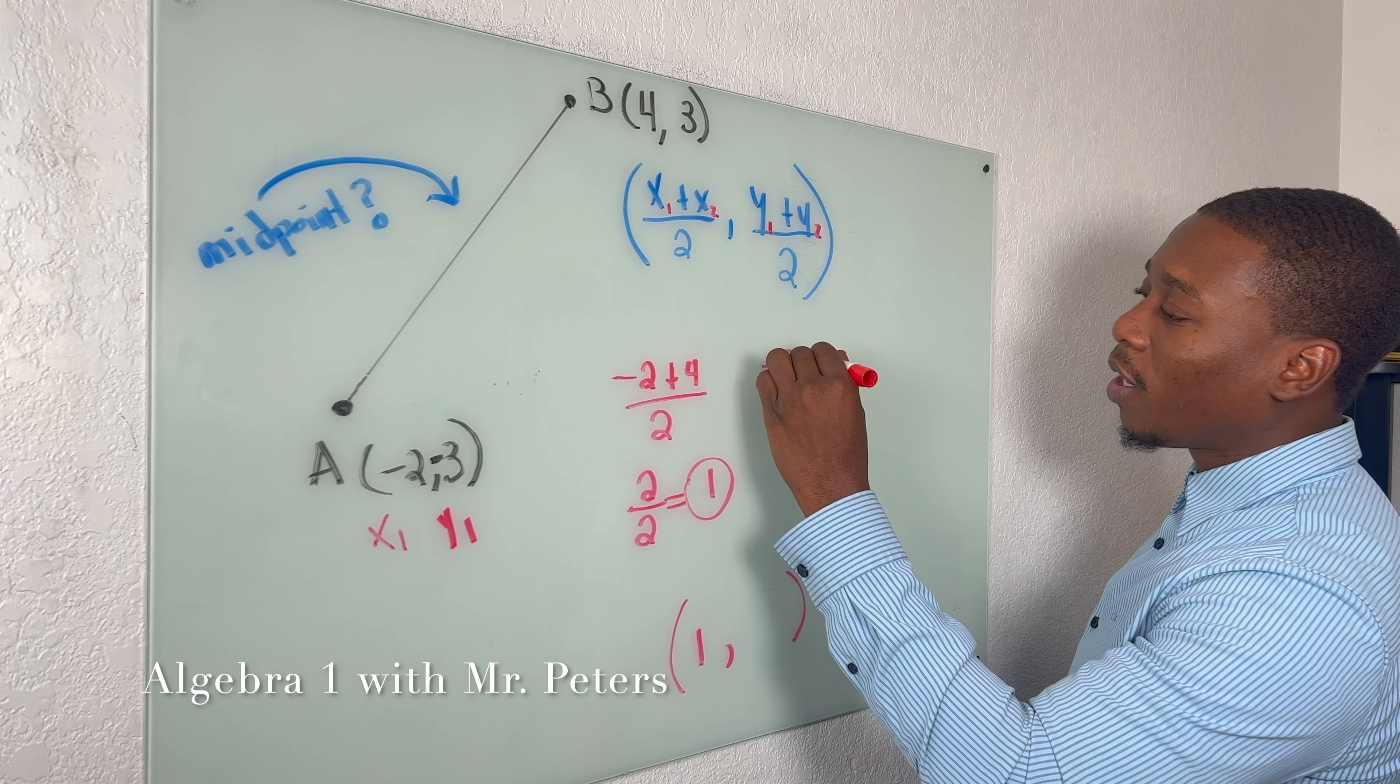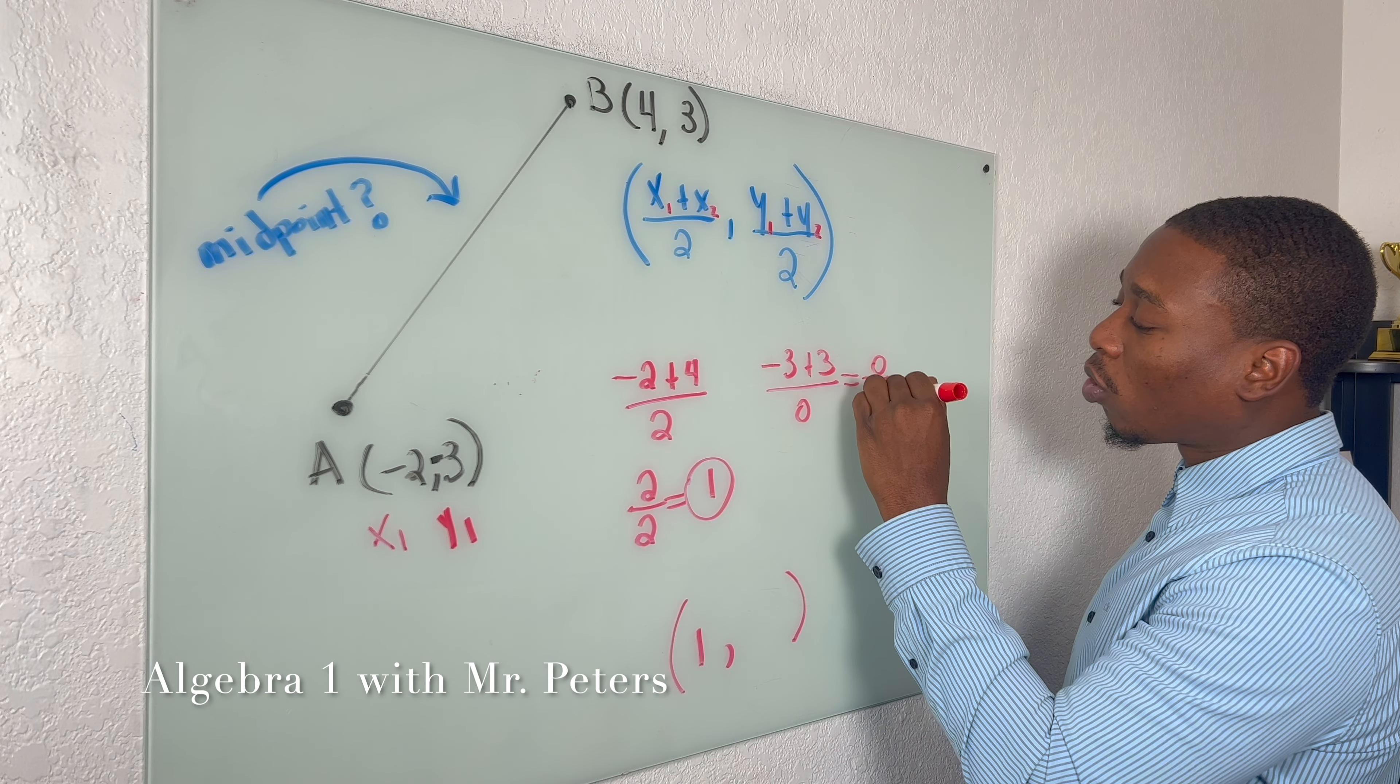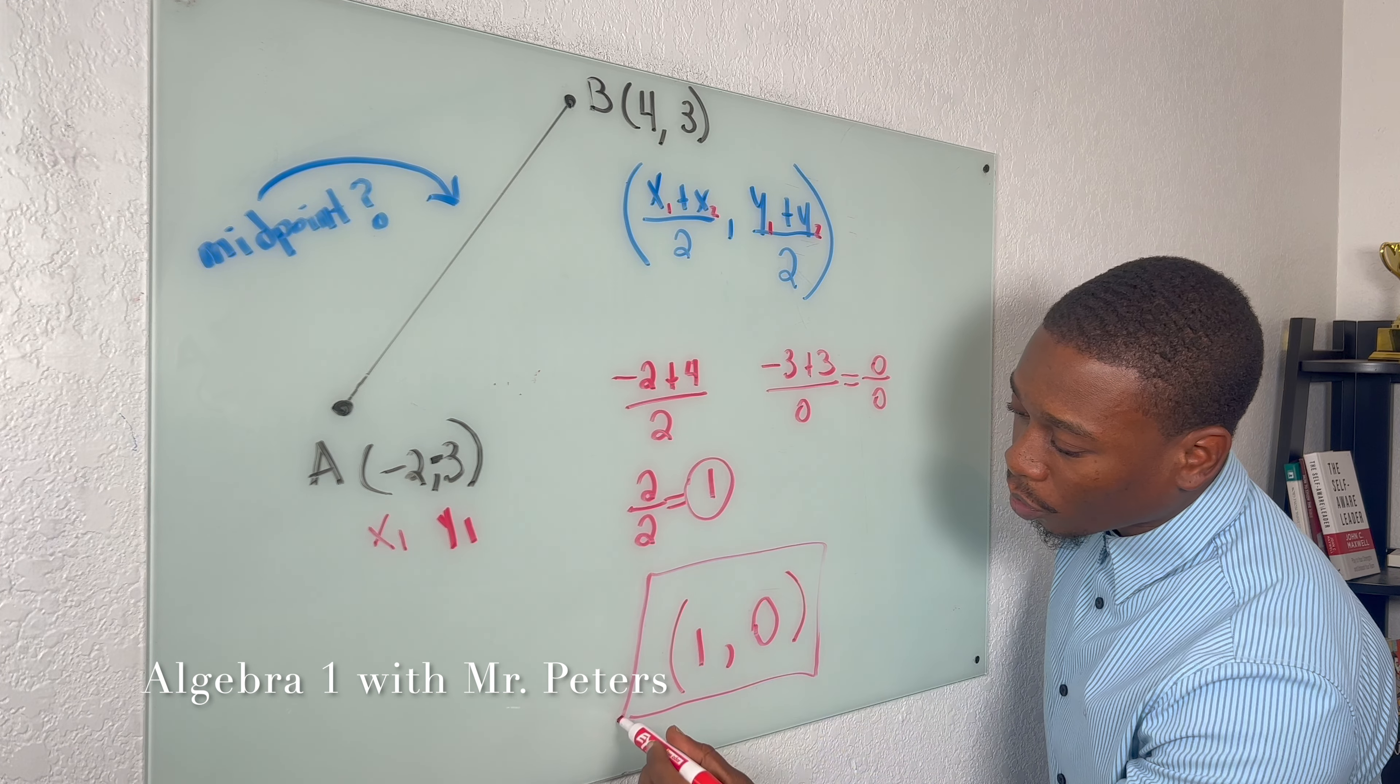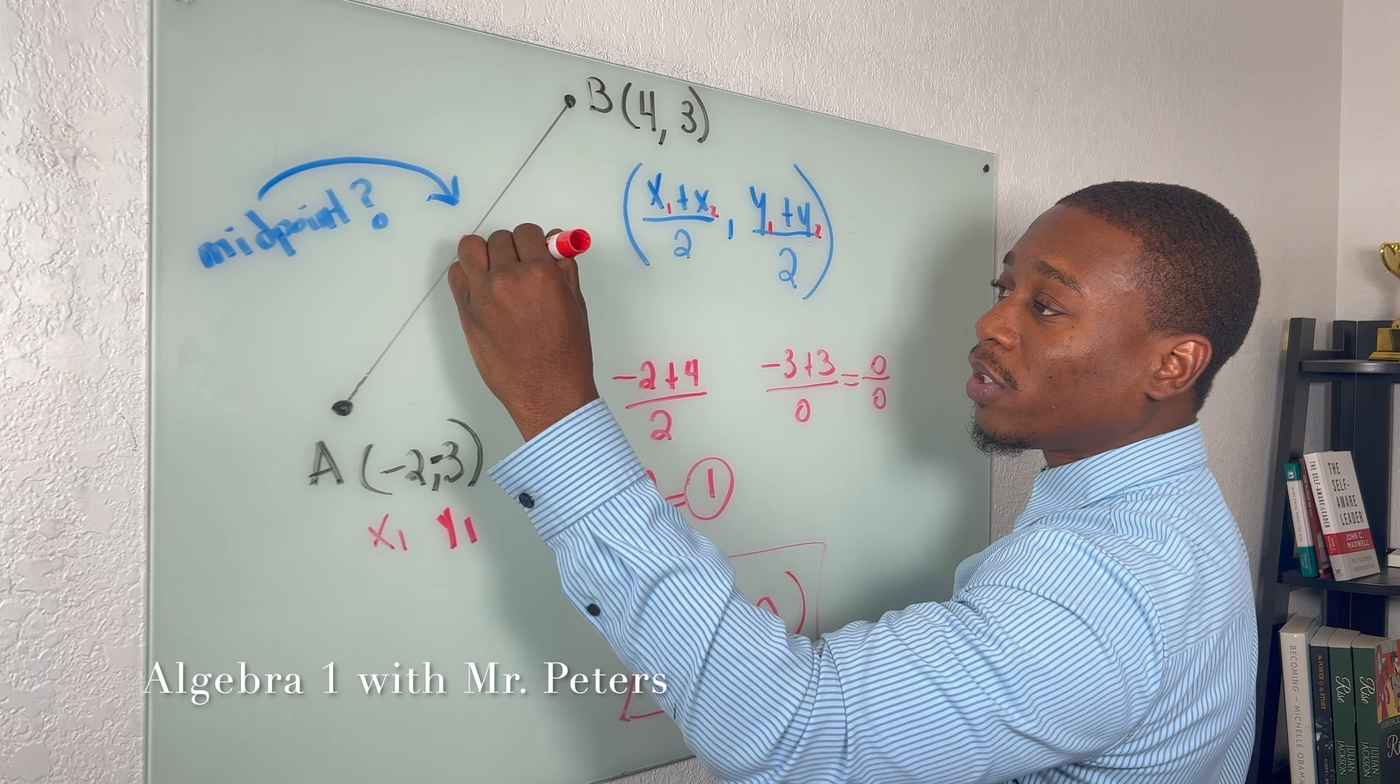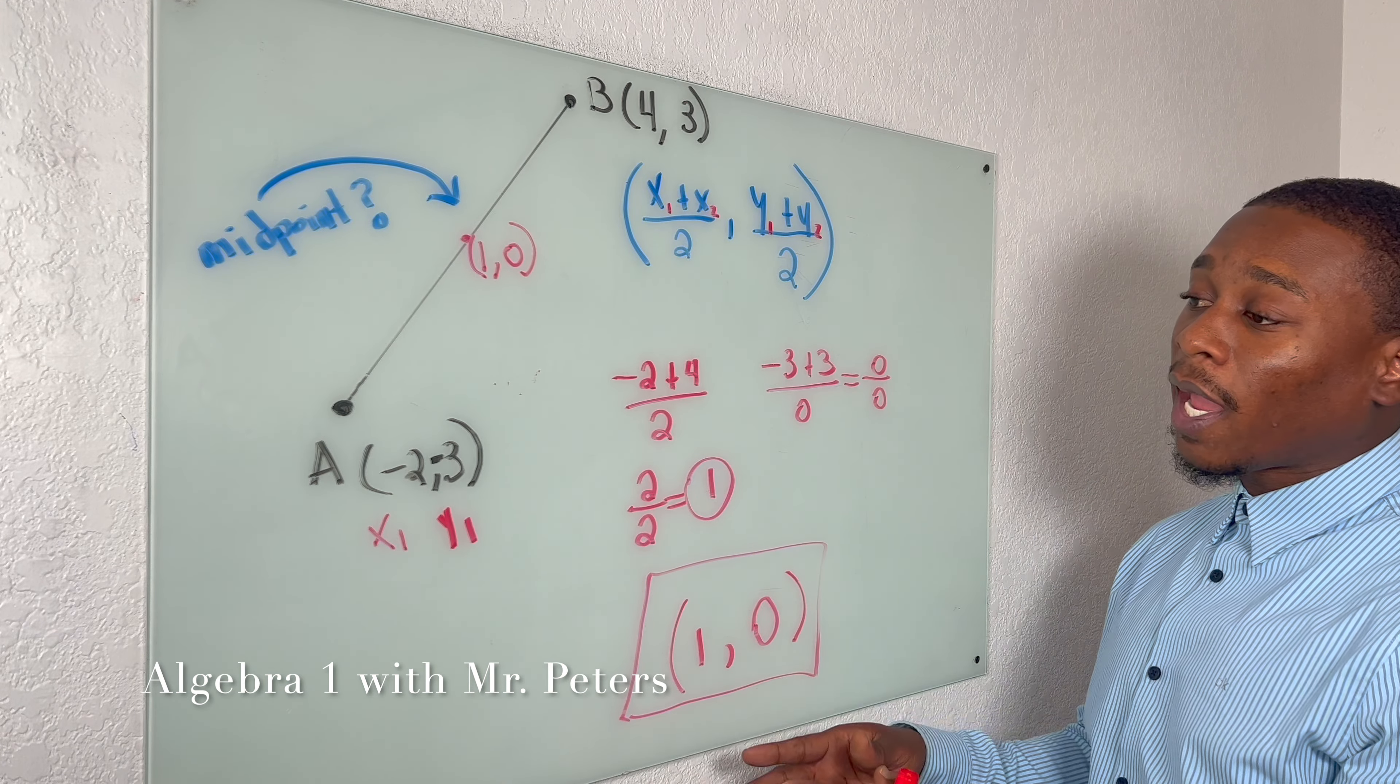Now we go back. We're going to do the same thing with y. So we have (-3 + 3) all over 2. We know 0 over 2 is just 0. So this is going to be my y coordinate. And when we look at this, this ordered pair of (1, 0), this is going to be the halfway point between A and B.